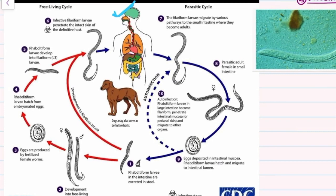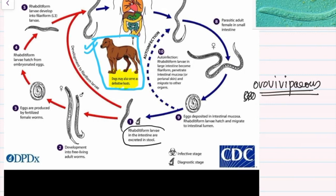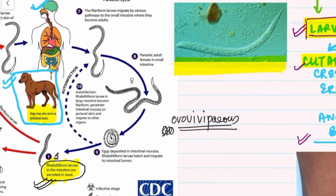Looking at the life cycle of Strongyloides, a common confusion is mistaking this image for Echinococcus (hydatid cyst). Note that dogs may also serve as definitive host, but check all other points. Strongyloides is ovoviviparous, so we usually do not find the egg in stool examination. As soon as eggs are deposited in the intestine they rupture, releasing rhabditiform larvae which are excreted in stool — the image of these larvae is also a previous year question.